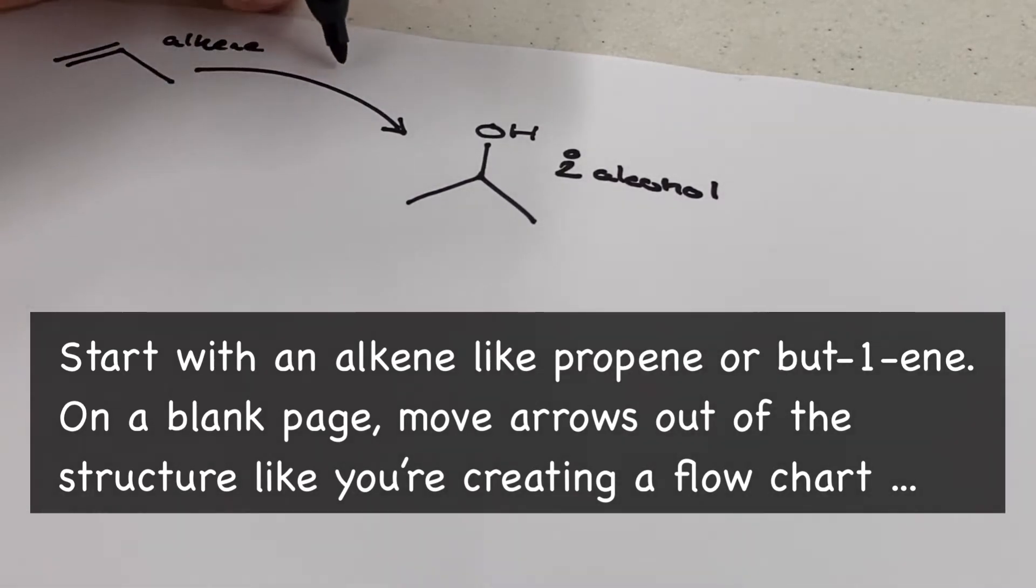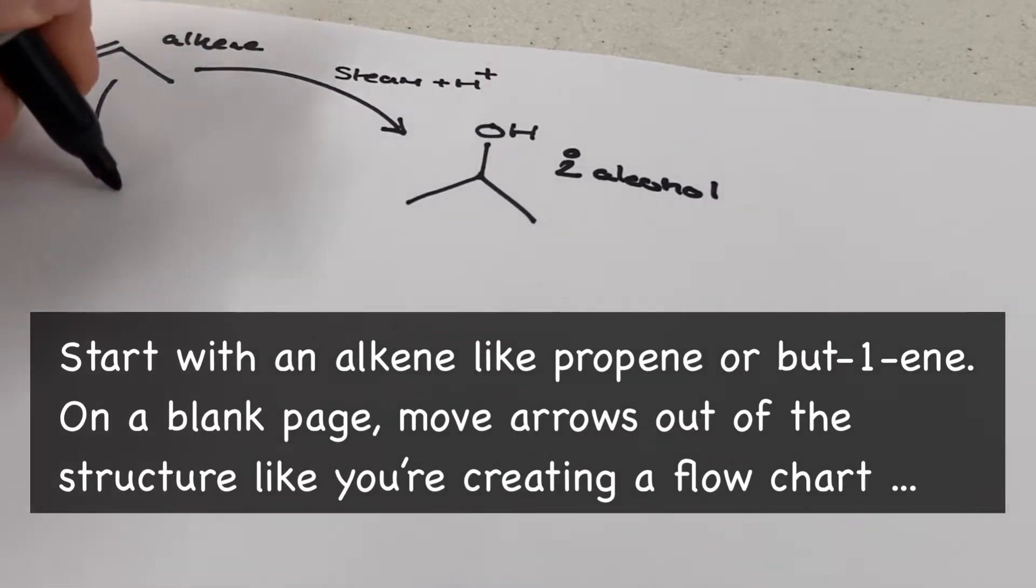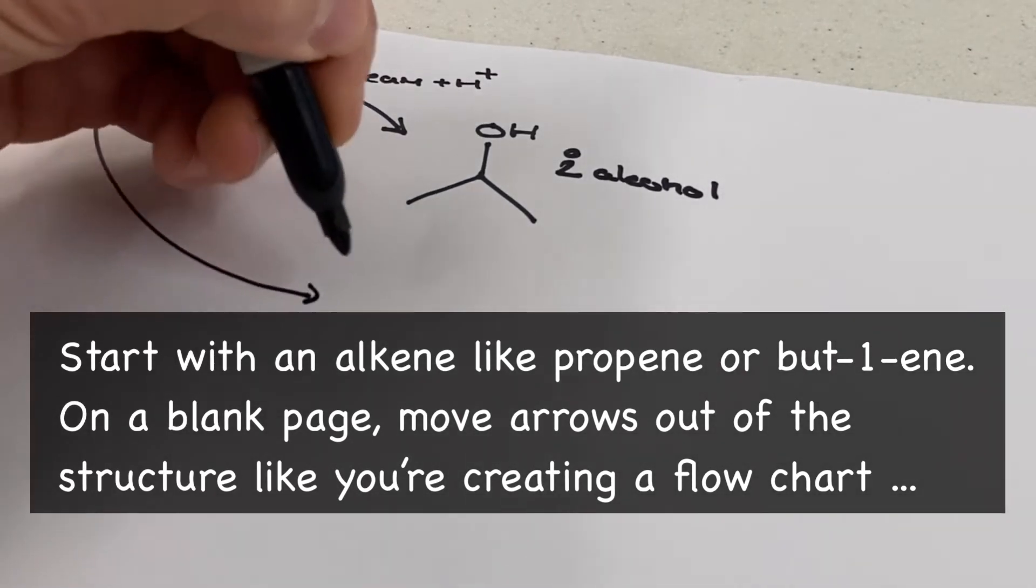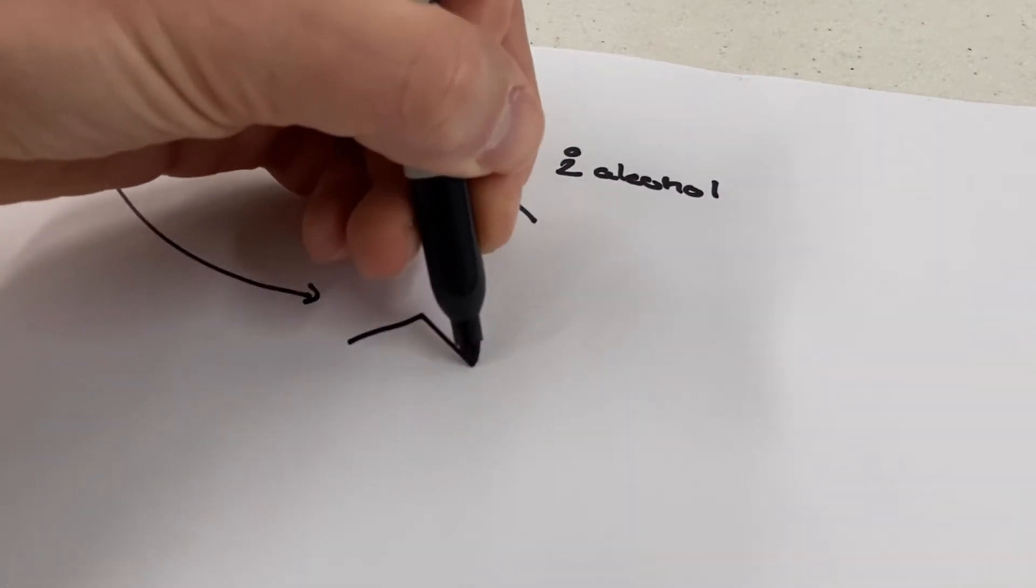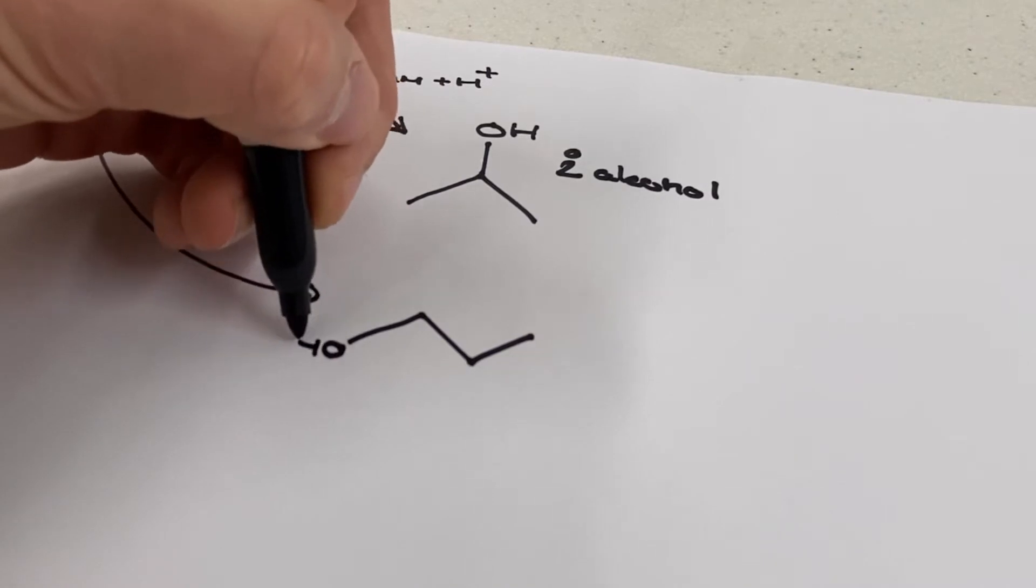So you're going to want to start off with a short alkene. You can see here that I'm using propene but you could also use something like butene. In later repeats of this process you can upscale to branched structures or even alicyclics. I would personally recommend using skeletal formula as it's more efficient, but displayed or structural is fine as well, just definitely not molecular.